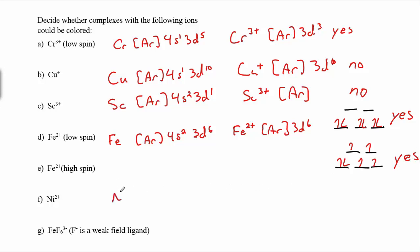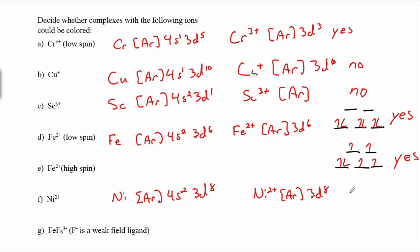For nickel 2+, nickel is [Ar] 4s² 3d⁸, so Ni²⁺ — after removing the two 4s electrons — is [Ar] 3d⁸. We're not d0 or d10; we're somewhere in between, so yes, we expect Ni²⁺ complexes to be colored.